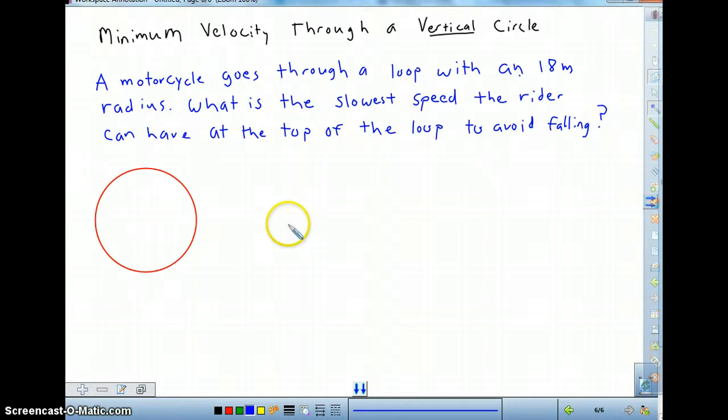The centripetal force we've been talking about or the force that makes it go through a circle has been due to maybe only one single force in many of those cases. It's a little bit trickier with the vertical circle, just have to consider some other factors. So this is a minimum velocity problem.